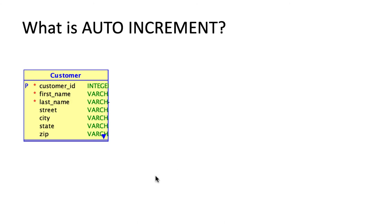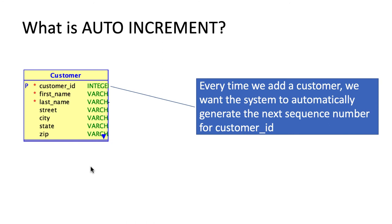The other very important thing we want to do is make every primary key column auto increment. We already said that customer ID is the primary key for customer and it must be unique — no two customers can have the same ID. When adding a new customer, it becomes a pain to manually track which ID number hasn't been used yet. If you already have 1,500 customers, how do you find a number not yet used? That manual tracking is a big burden.